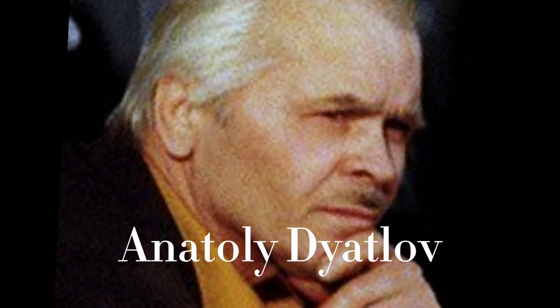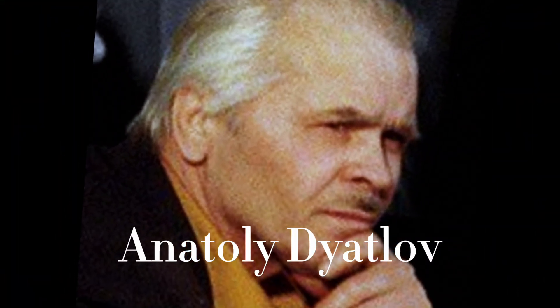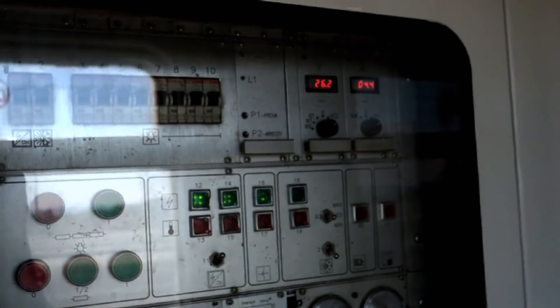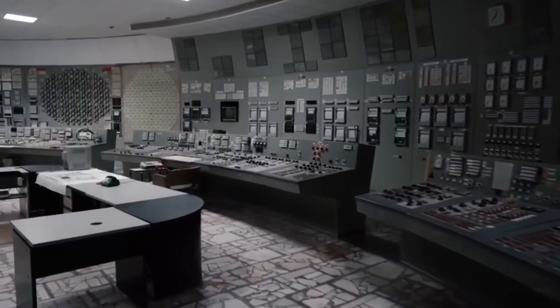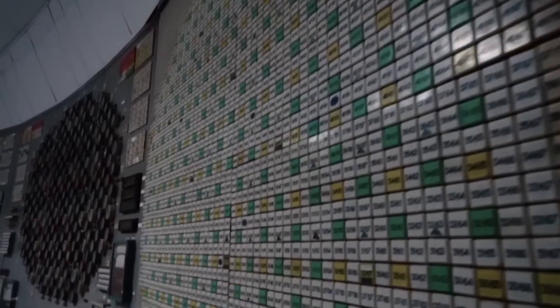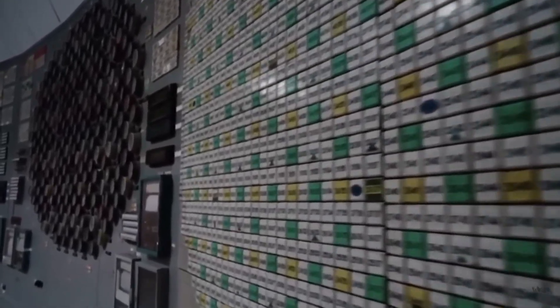One man, Anatoly Dyatlov, the deputy chief engineer, pushed the operators to continue the test despite clear warning signs. When the reactor's power dropped too low, they tried to raise it again. But the reactor's behavior became unpredictable. The power surged uncontrollably.